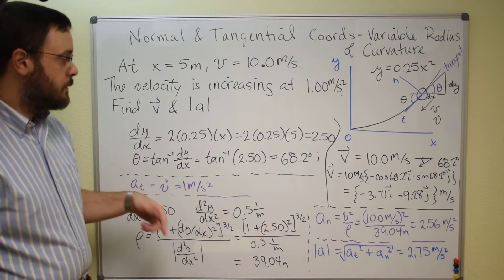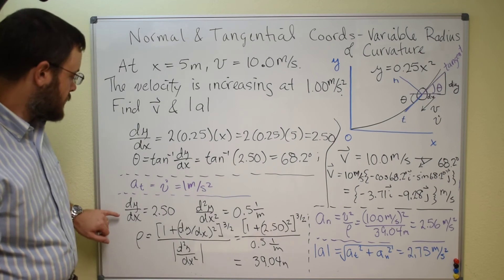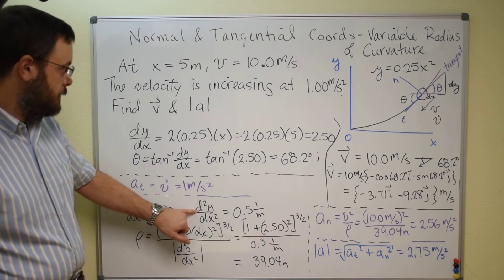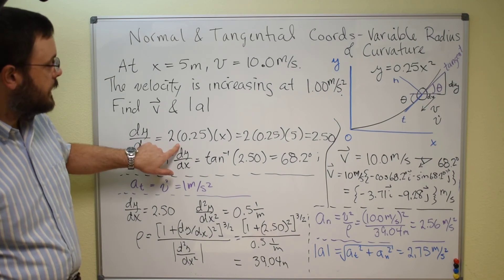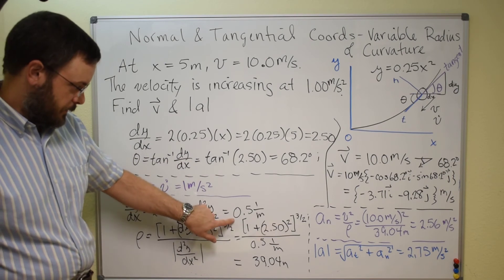But to get the normal acceleration, that's going to be v squared divided by the radius of curvature. So we've got our first derivative, we need to get our second derivative, so come back up here, second derivative would just leave you with the 0.5, so it'll be 0.5.